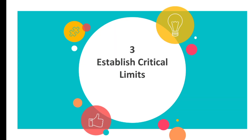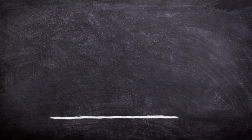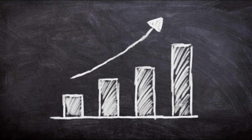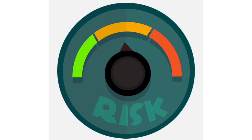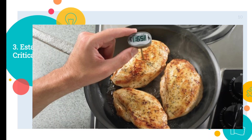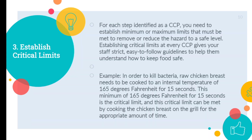The third step is Establish Critical Limits. For each step identified as a CCP, we need to establish a maximum or minimum limit that must be met to remove or reduce the hazard to a safe level. For example, in order to kill bacteria, raw chicken needs to be cooked to an internal temperature of 165 degrees for 15 seconds. This minimum of 165 degrees for 15 seconds is the critical limit, and it can be met by cooking the chicken on a grill for the appropriate amount of time.